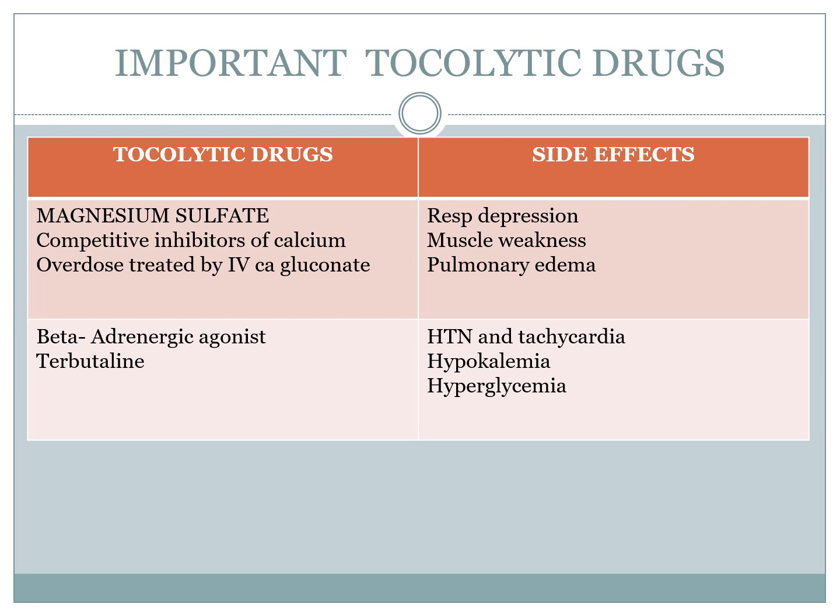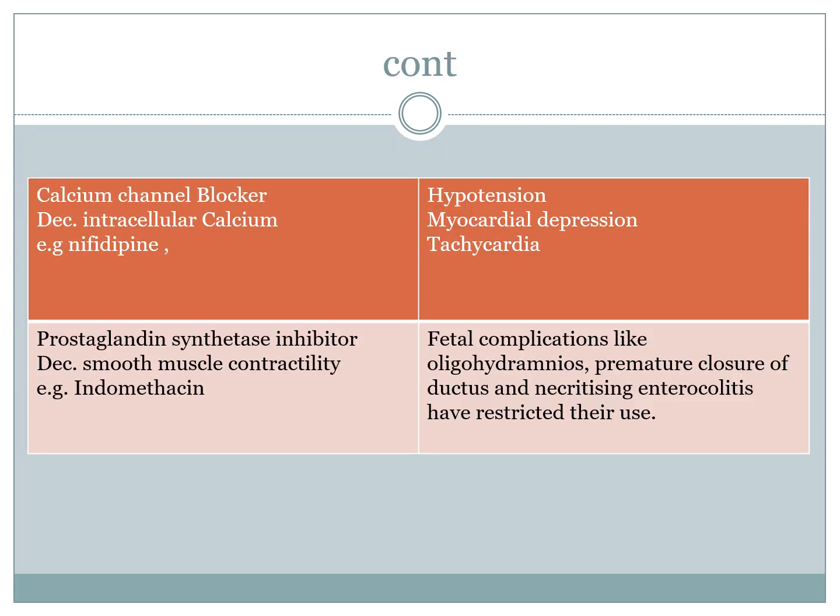The beta-adrenergic agonist terbutaline has side effects including tachycardia, hypertension, hypokalemia, and hyperglycemia. One of the first-line favorite agents nowadays is the calcium channel blocker nifedipine, which decreases intracellular calcium. Side effects include hypotension, myocardial depression, and tachycardia. For the prostaglandin synthetase inhibitor indomethacin, it decreases muscle contractility. Fetal complications include oligohydramnios, premature closure of the ductus arteriosus, and necrotizing enterocolitis, restricting its use.